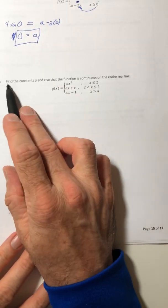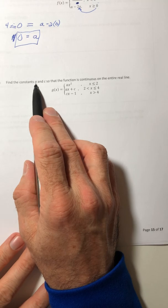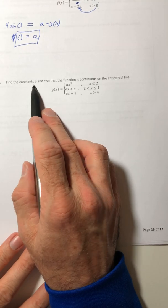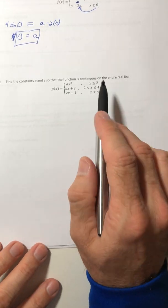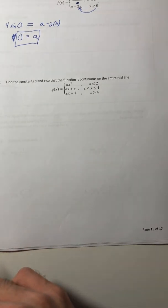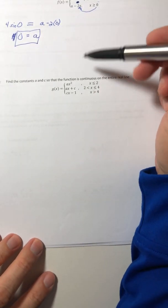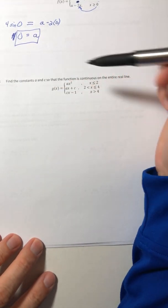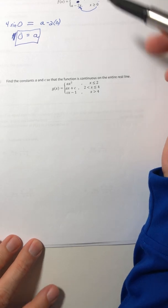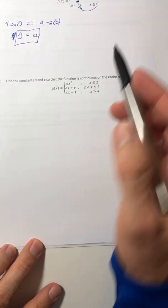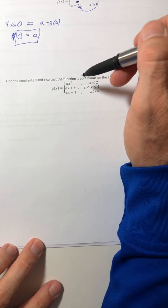Example 7: find the constants A and C — now you've got two of them — so that the function is continuous. Two constants and three lines. We're going to take it a piece at a time.